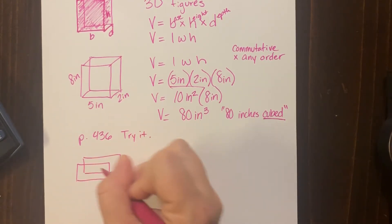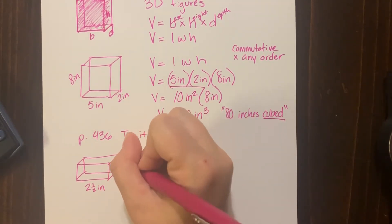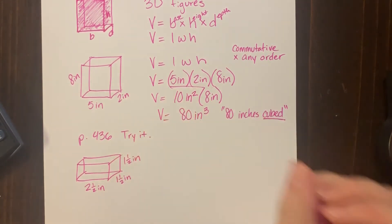Try to draw it. It says find the volume of the rectangular prism built from one inch cubes. All right, they gave us kind of—this one is two and a half inches.